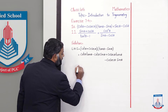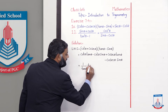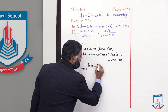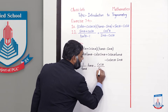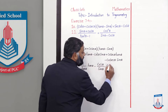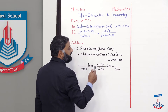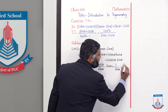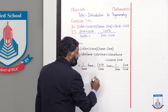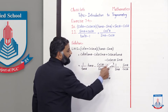Now, cot θ · tan θ: the tan θ cancels, giving 1. Then cot θ · sin θ = (cos θ / sin θ) · sin θ. For cosec θ · tan θ: 1/sin θ, so tan θ gives sin θ / cos θ. And cosec θ · sin θ = (1/sin θ) · sin θ.